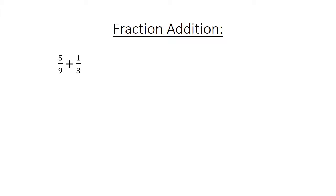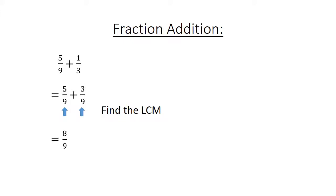Fraction addition: 5 over 9 plus 1 over 3. Find the lowest common multiple. 5 over 9 plus 3 over 9 equals 8 over 9.